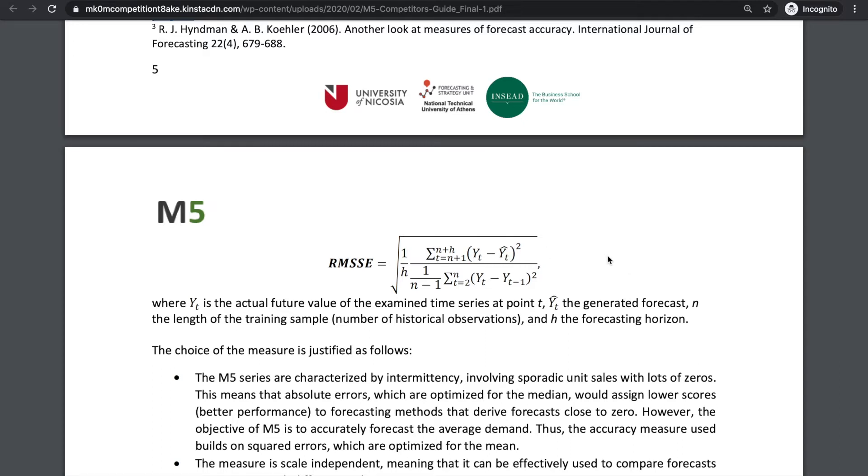The numerator is calculated by the sum of squared differences between the actual sales value and the forecasted value for each of the 28 days. We're instructed to use a variation of squared error instead of absolute error, because absolute loss functions optimize for the median.